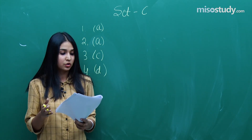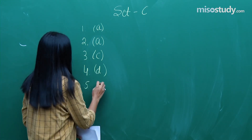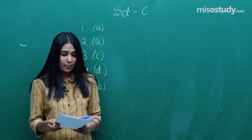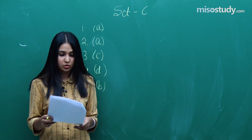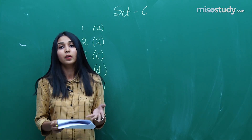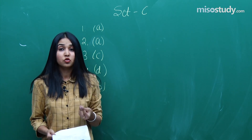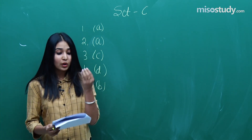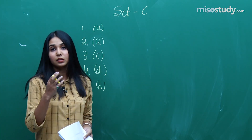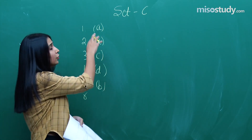Question number 5 was from titrations — again a conceptual question — and the answer for question 5 is option B. Question number 6 was from ionic equilibrium. As I said in the beginning, ionic equilibrium was covered the most, and the answer for question 6 is option A.